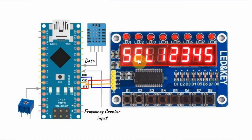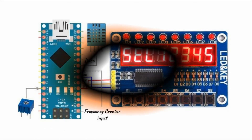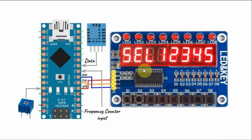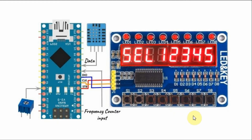Pressing S3 will display a 16-level bar graph, and the bar graph level is controlled by a potentiometer connected to analog pin A7 of the Arduino. Pressing S4 will display scrolling text on the display, and the speed of the scroll will be controlled by this potentiometer. Pressing S5 will display an 8-bit binary count, and the speed of the count can also be controlled by this pot. For the binary count and for the scrolling text, we can exit the function by pressing S8.